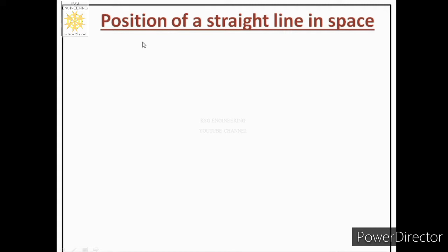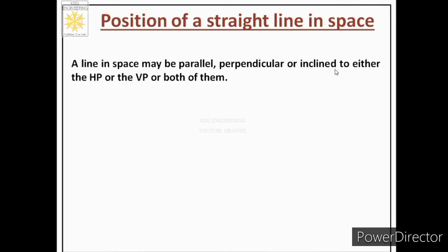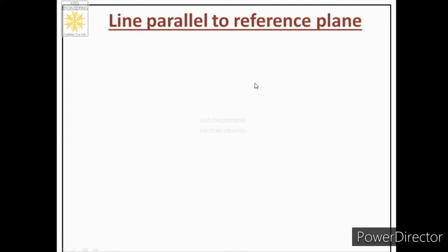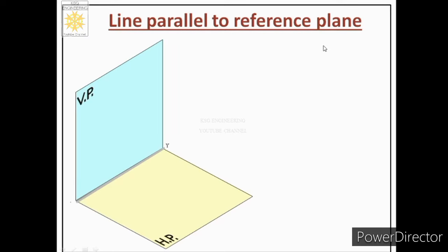Next we will learn about the position of a straight line in space. A line in space may be parallel, perpendicular, or inclined to either the HP or VP or both of them. Let us first see the case of a line parallel to a reference plane and conclude a few important points.